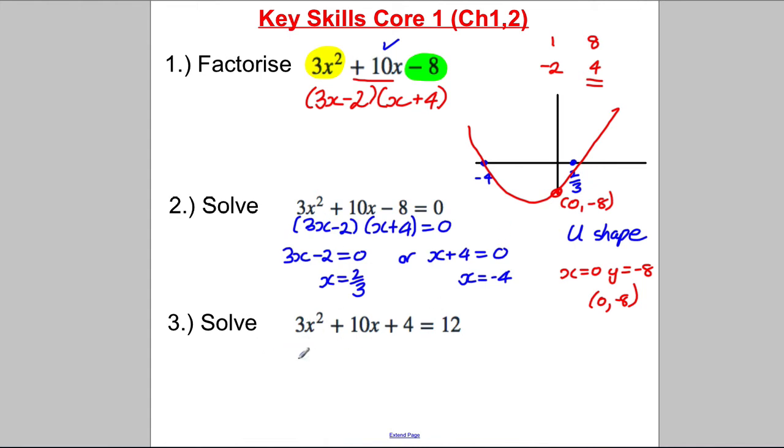Now we're asked to solve the quadratic 3x squared add 10x add 4 is 12. The techniques we have only allow us to solve quadratics when they're equal to 0. So the first thing I'm going to do is manipulate this quadratic subtract 10 off both sides to make the right hand side 0. So I'm going to get myself 3x squared add 10x take away 8 is 0 and oh look it's exactly like the ones I did in the first example which I have factorized and then hence solved and I can just state the answers here.